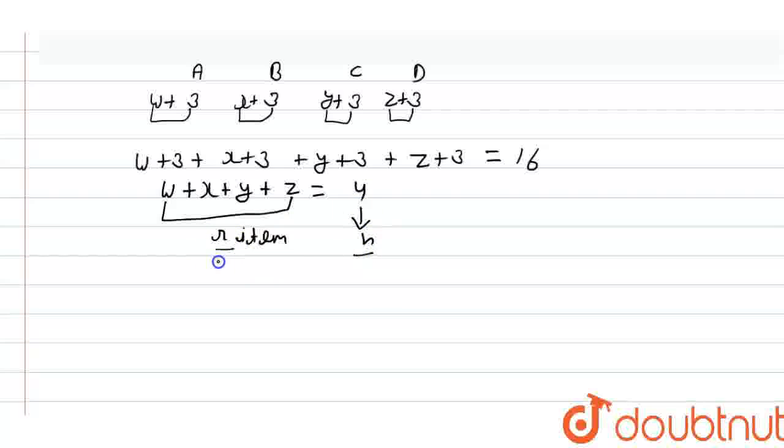For this type of condition, we know one formula that N plus R minus 1, C R minus 1. Just apply this formula into this solution where N is 4 and R is also 4.